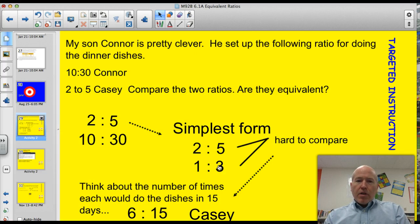Well, I have two sons, Connor and Casey, and they're a little bit competitive, always trying to outmaneuver one another. So here's the question about those two. My son Connor is pretty clever. He set up the following ratios for doing the dinner dishes. Connor, 10 to 30. Casey, 2 to 5. Compare these two ratios. Are they equivalent?